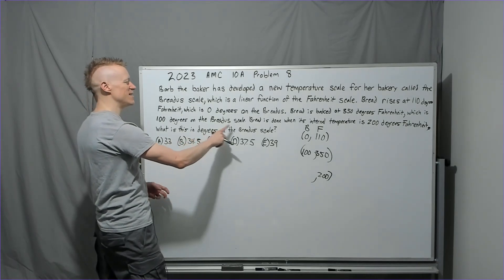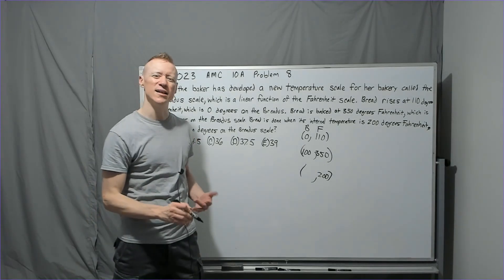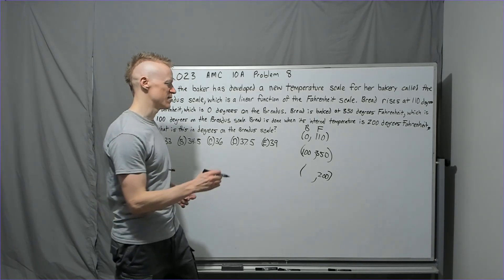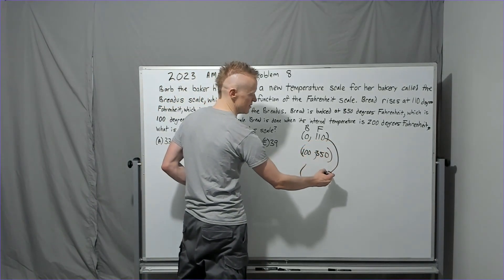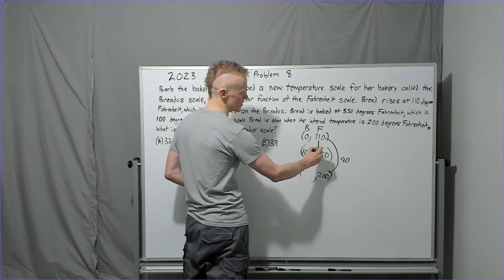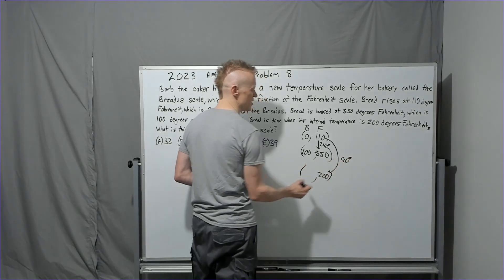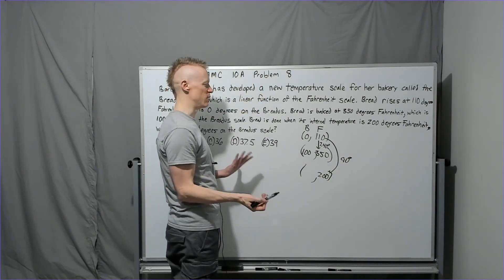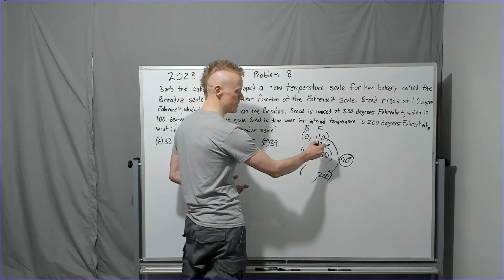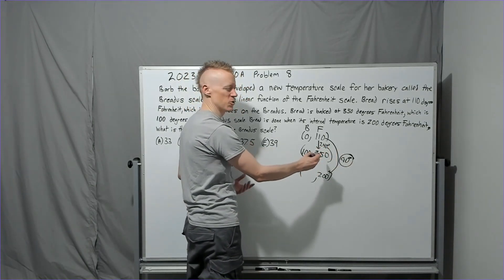Bread is done when its internal temperature is 200°F. What is this in degrees on the Brettis scale? Rather than using the normal slope-intercept approach, I'll notice that from 110 to 200°F is a distance of 90°, whereas the full range from 110 to 350°F is 240°. Since it's a linear process, I'll use rise over run with a common divisor of 30.